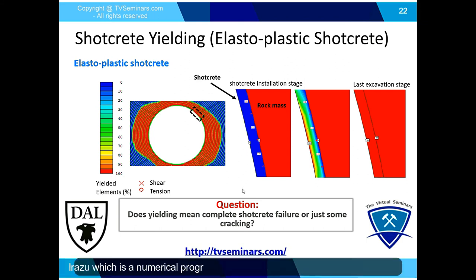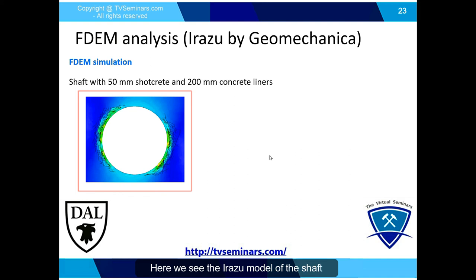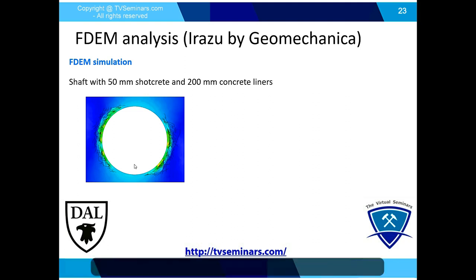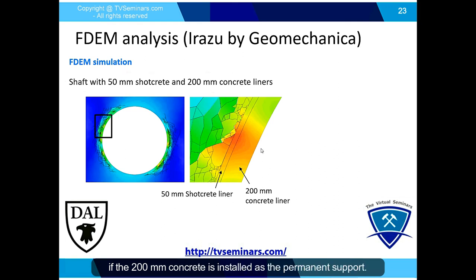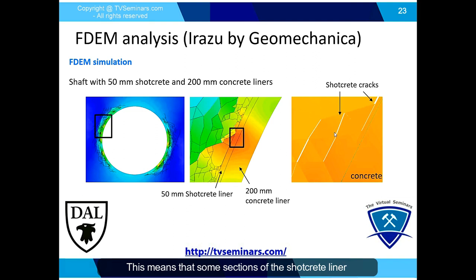To answer this question, IRAZU, a numerical program based on the finite-discrete element method, was used to explicitly simulate shotcrete fracturing. The IRAZU model of the shaft shows the excavation damage zone around it, and the excavation advance was simulated using the core softening approach. This model required extensive calibration for the rock mass as well as both shotcrete and concrete liners. Simulation results show that the 50 mm shotcrete remains stable if the 200 mm concrete liner is installed as permanent support. A closer view indicates that small cracks develop in the shotcrete by the time the concrete is installed, meaning some sections experienced plastic deformation but did not fail.